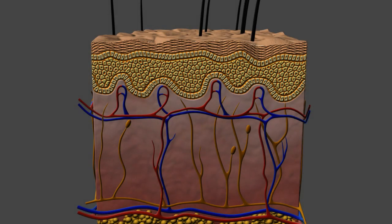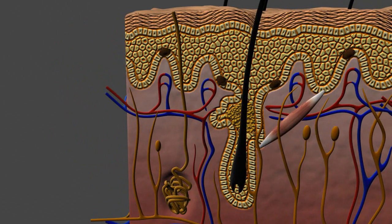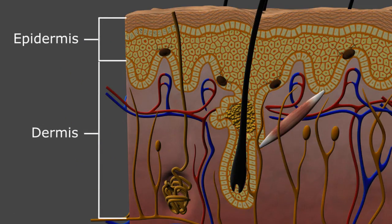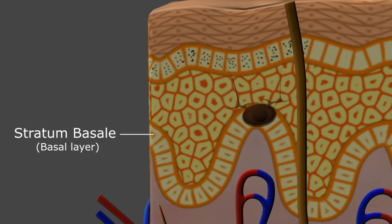As we discussed in a previous video, the skin is broadly divided into the deep and superficial layers of the dermis and epidermis, respectively. The epidermis is further divided into five or six layers with the deepest two layers, the stratum basale, or basal layer, and the stratum spinosum, or spinous layer.